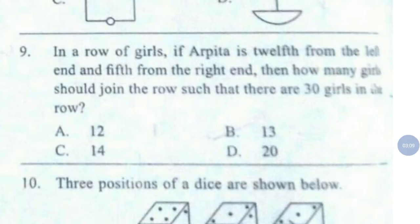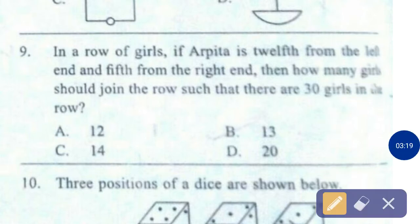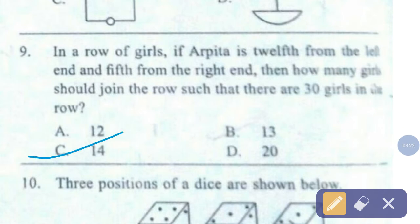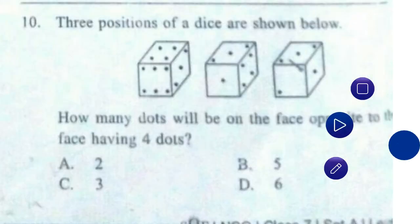Question number 9. In a row of girls, if Arpita is 12th from the left and 5th from the right end, then how many girls should join the row such that there are 30 girls in the row? The correct answer is option number C — 14.